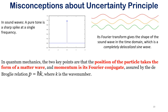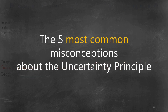In quantum mechanics, the position of the particle takes the form of a matter wave, and the momentum gets a kind of Fourier conjugate. One is a spike and the other is a Fourier conjugate, and as soon as we get a Fourier conjugate we get a wider dispersion in terms of standard deviation, making it very difficult to calculate. This is one of the most important reasons why Fourier transform and quantum mechanics are related to each other.